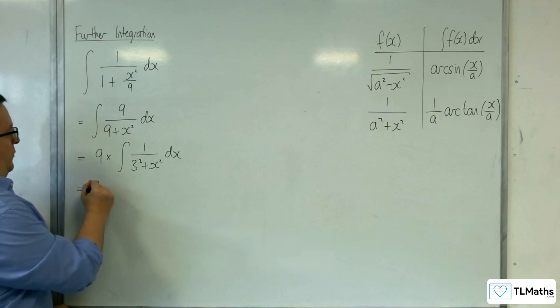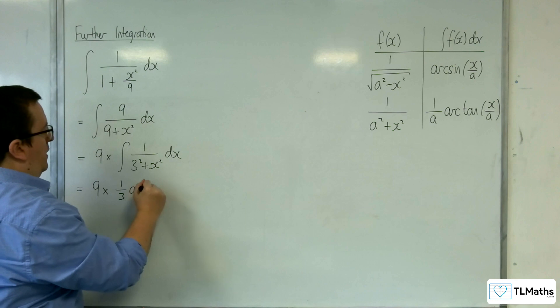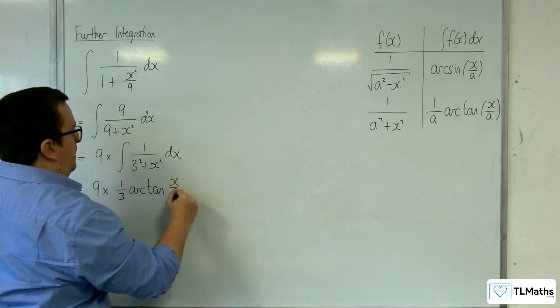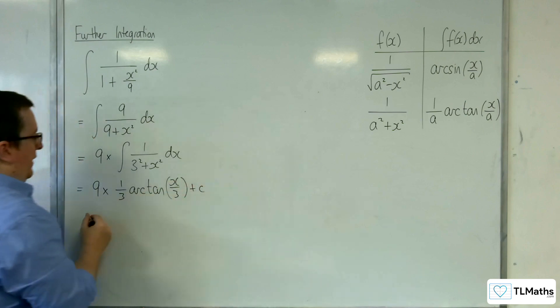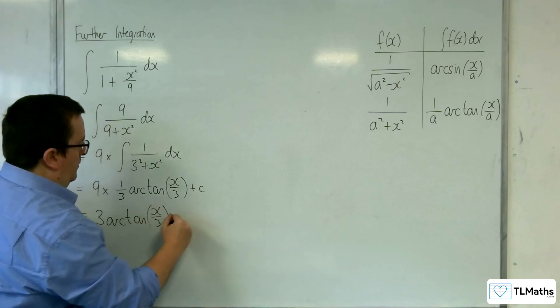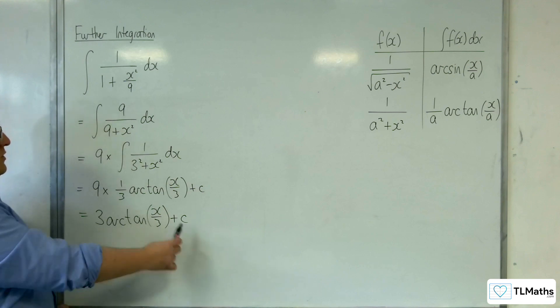This is equal to 9 times 1 over a, so 1 over 3, arctan of x over 3 plus some constant c, which is equal to 3 arctan x over 3 plus c. That is the result of the integral.